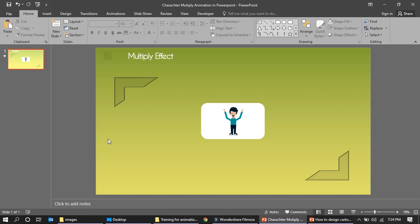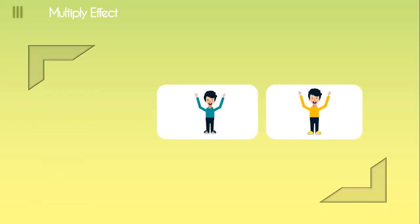Hi friends, today I'm going to show you how to create the multiply effect or a multiple animation effect in PowerPoint for an object or a shape. This is one example of what I mean — I'm just going to play it. You can see the characters are getting multiplied. So let's see how we are going to do it.